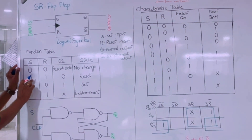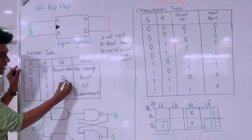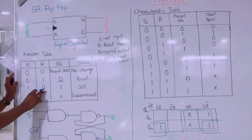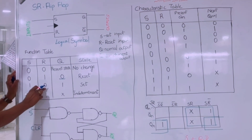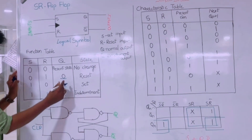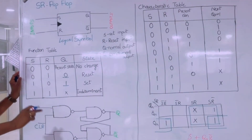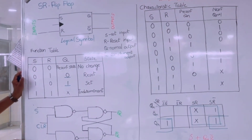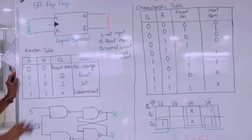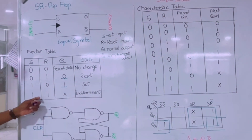When the input is 0,1 we get the reset condition, which gives output 0. When the input is 1,0 — set is 1 and reset is 0 — we get the set condition, which gives output 1. For input 1,1, when we apply 1,1 with the clock pulse we get an indeterminate output. We are not able to get a defined output for this combination.